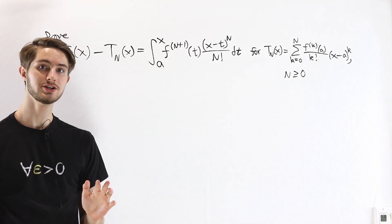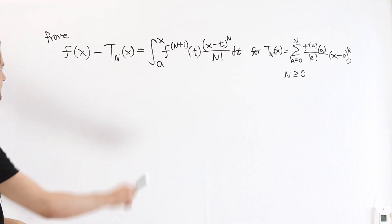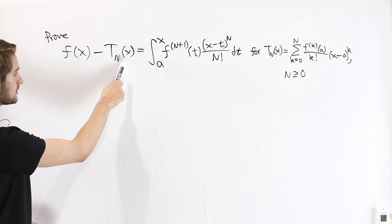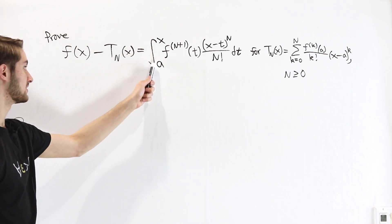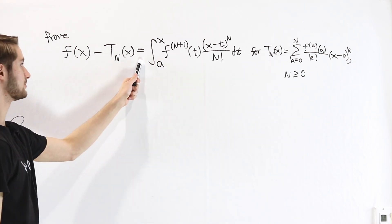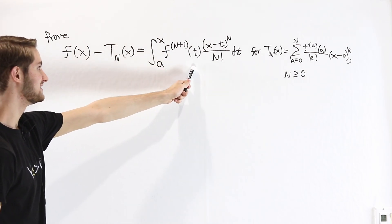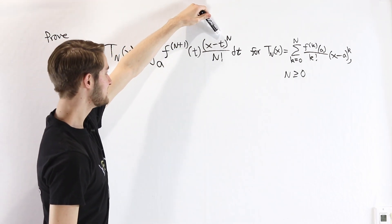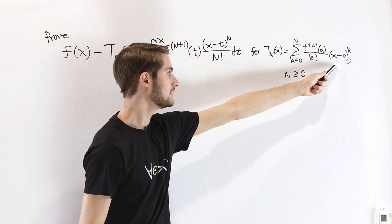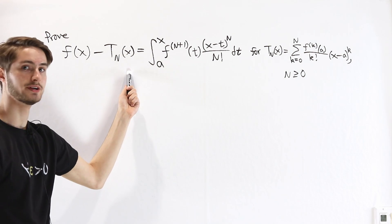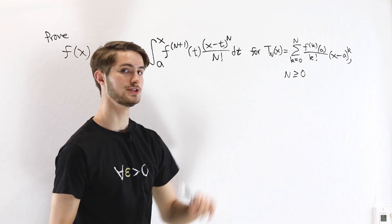We are going to prove an equation for the error of an nth order Taylor polynomial — namely that f(x) minus the nth order Taylor polynomial evaluated at x, where our polynomial is centered around a, equals the integral from a to x of the (n+1)th derivative of f evaluated at t, times (x minus t)^n over n factorial dt. Here is the sum for that nth order Taylor polynomial. We want to prove this for all integers greater than or equal to zero.